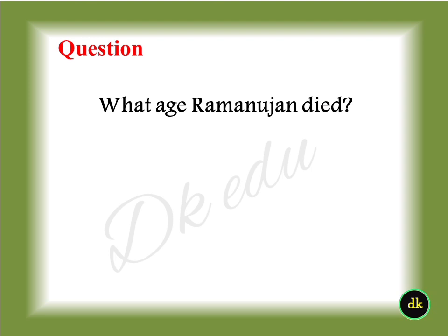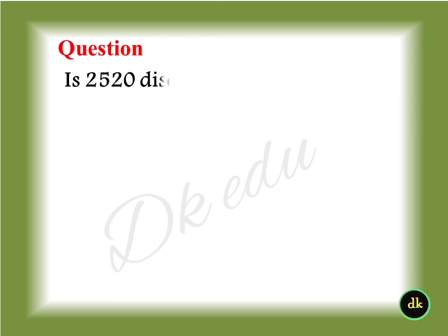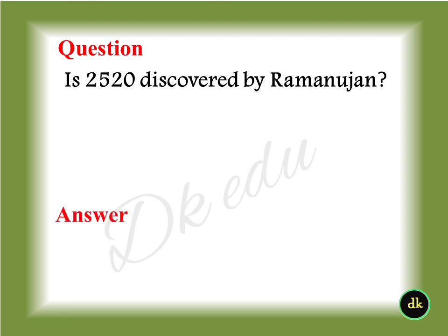What age did Ramanujan die? Answer: At the age of 32. The number 2520 was discovered by Ramanujan.